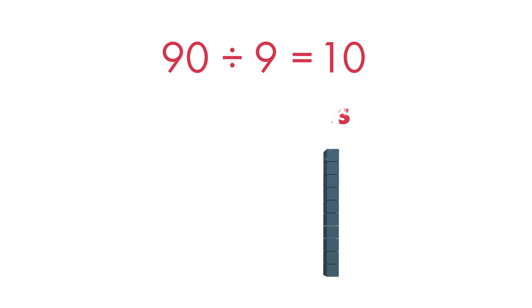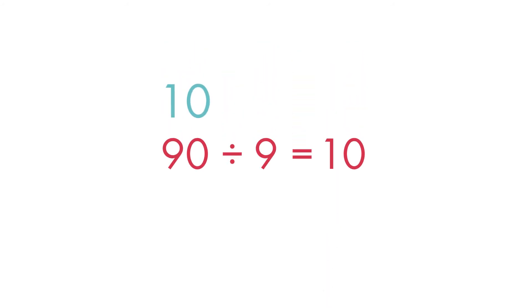Check your work using multiplication. 10 times 9 is equal to 90, so 90 divided by 9 is equal to 10.